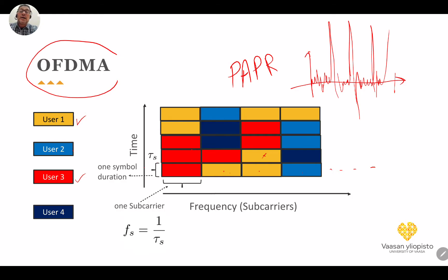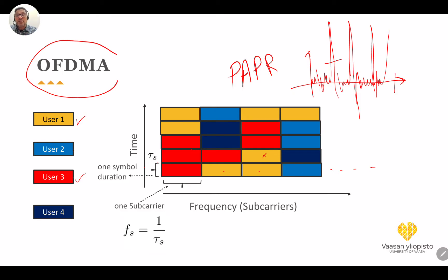If you compare the peak power and divide it by the average power, the difference can be very high. When this difference is high, you need to use a linear power amplifier to transmit the signal, because the operating point of the amplifier must be in the middle to cover the entire signal range. If you use a non-linear power amplifier, the signal may be clipped, causing intercarrier interference and loss of the orthogonality principle in OFDM.